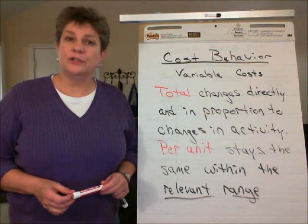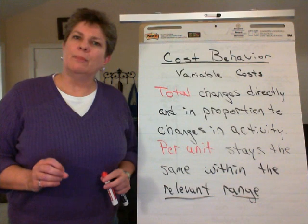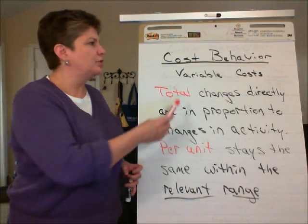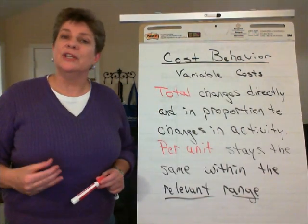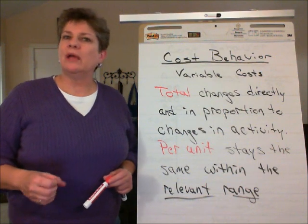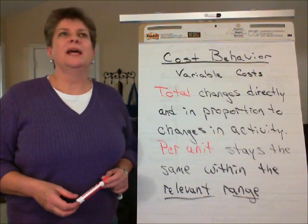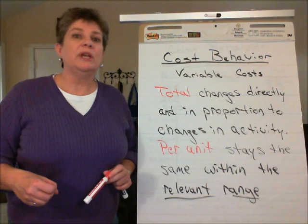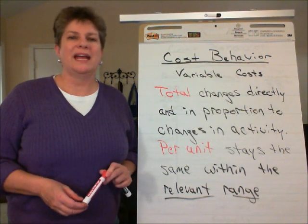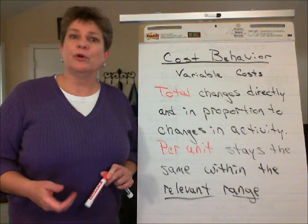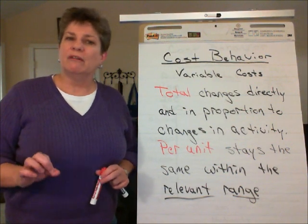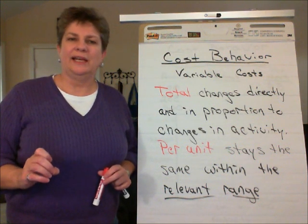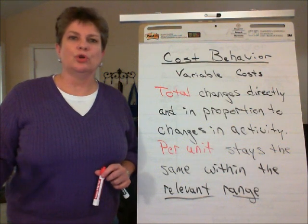Managerial accounting cost behavior. One thing that a manager needs to know in order to predict what costs will be in the future is how those costs will behave in relation to changes in activity measures. Activity may be measured as number of units produced, machine hours, or in other terms such as how many phone calls the customer service department handles, or how many purchase orders the purchasing department processes. Whatever the activity measure we choose, we need to understand how cost will change as that activity measure changes.